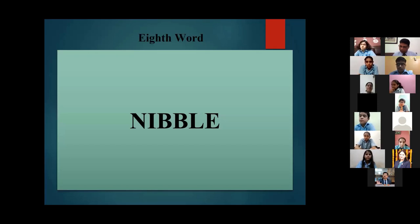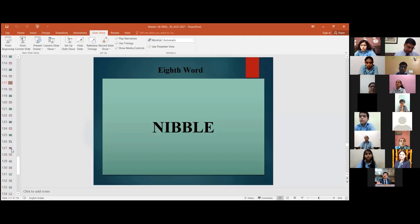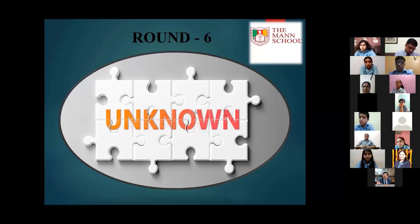This is the end of round five. Scores: Dyanan House 14 marks, Vyas House 17 marks, Buddha House 16 marks. Participants advancing to round six: Samiksha Garg from Buddha House, Neha Bhardwaj from Vyas House, Girisha Bajaj from Vyas House, and Nishtha Kumar Rana from Dyanan House.